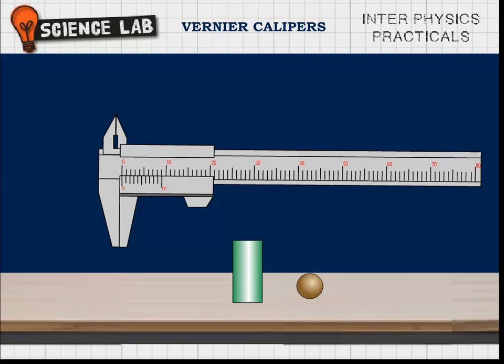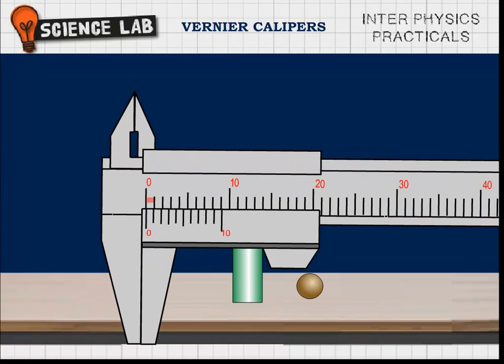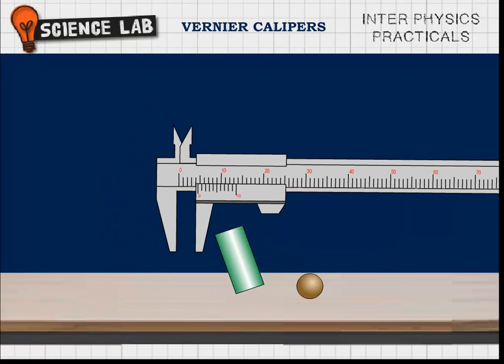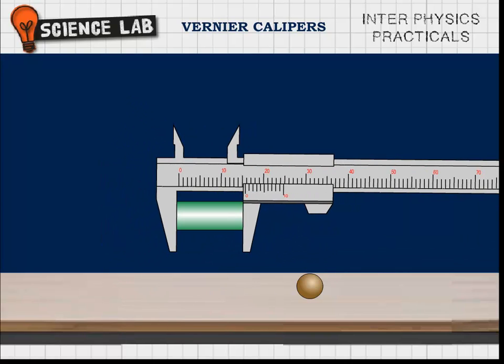Procedure: Before taking the readings, the least count of the vernier calipers is determined. The given cylinder is gripped gently between the jaws A and B. The reading on the main scale just before the zero of the vernier is noted.